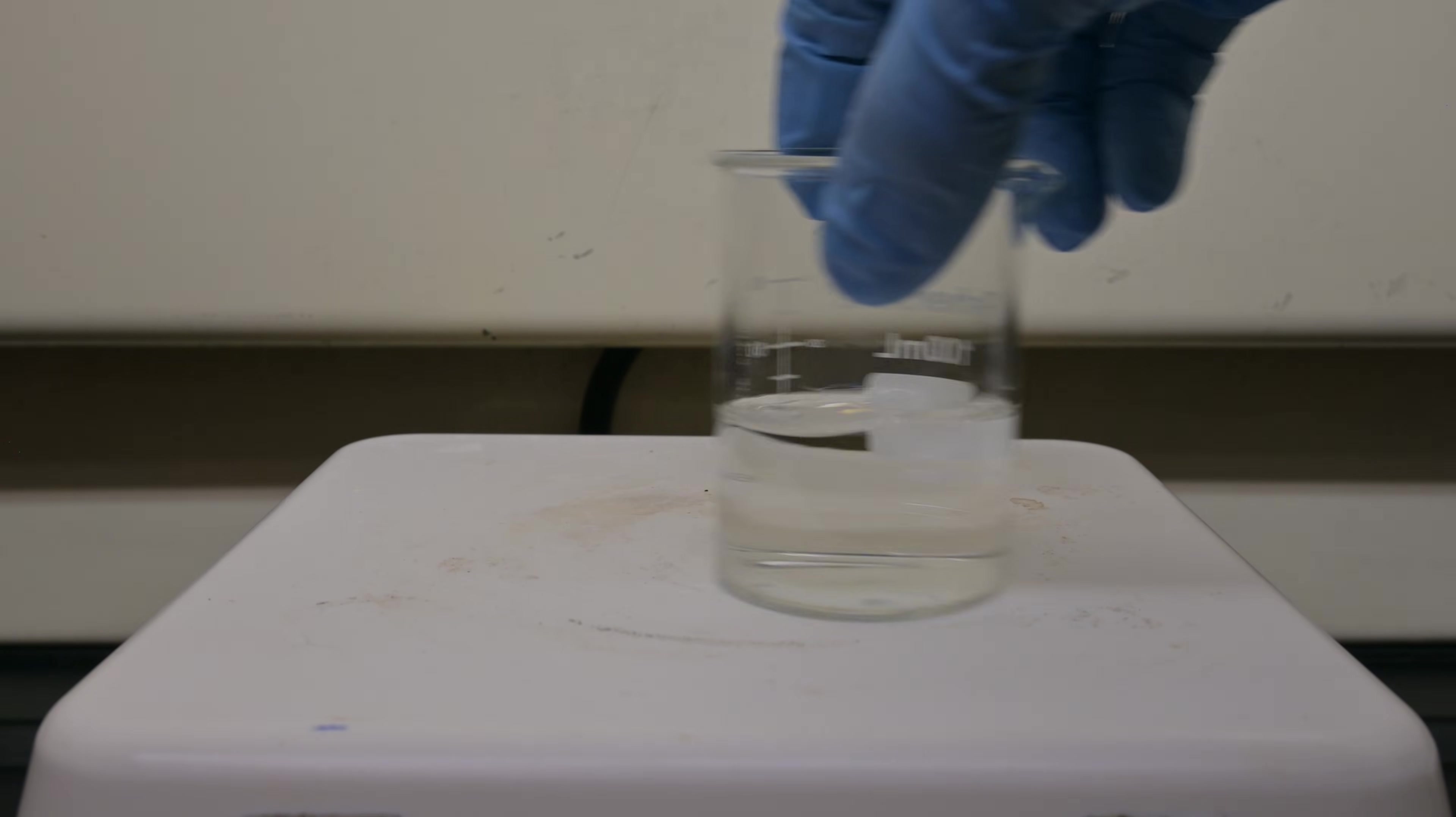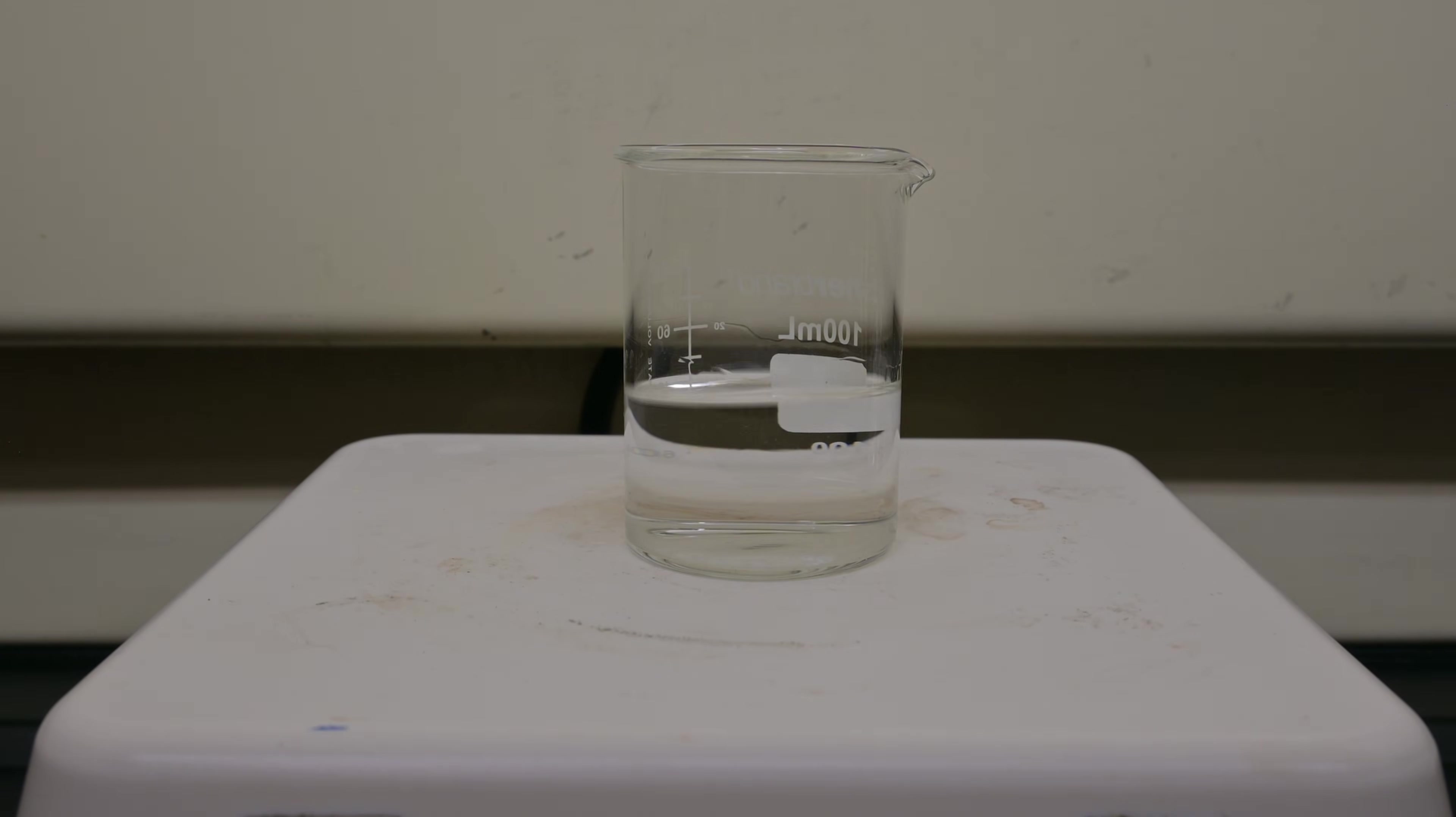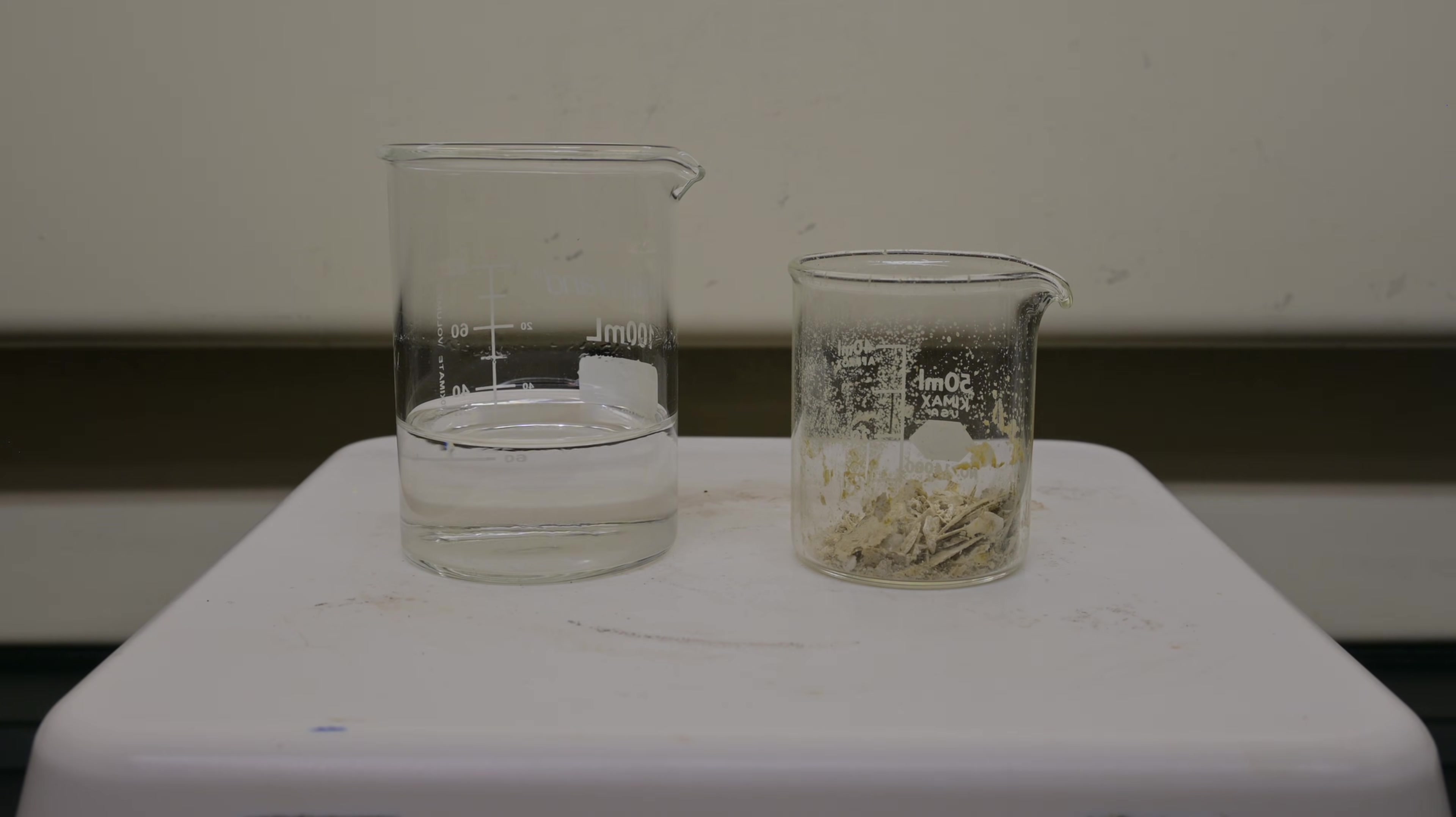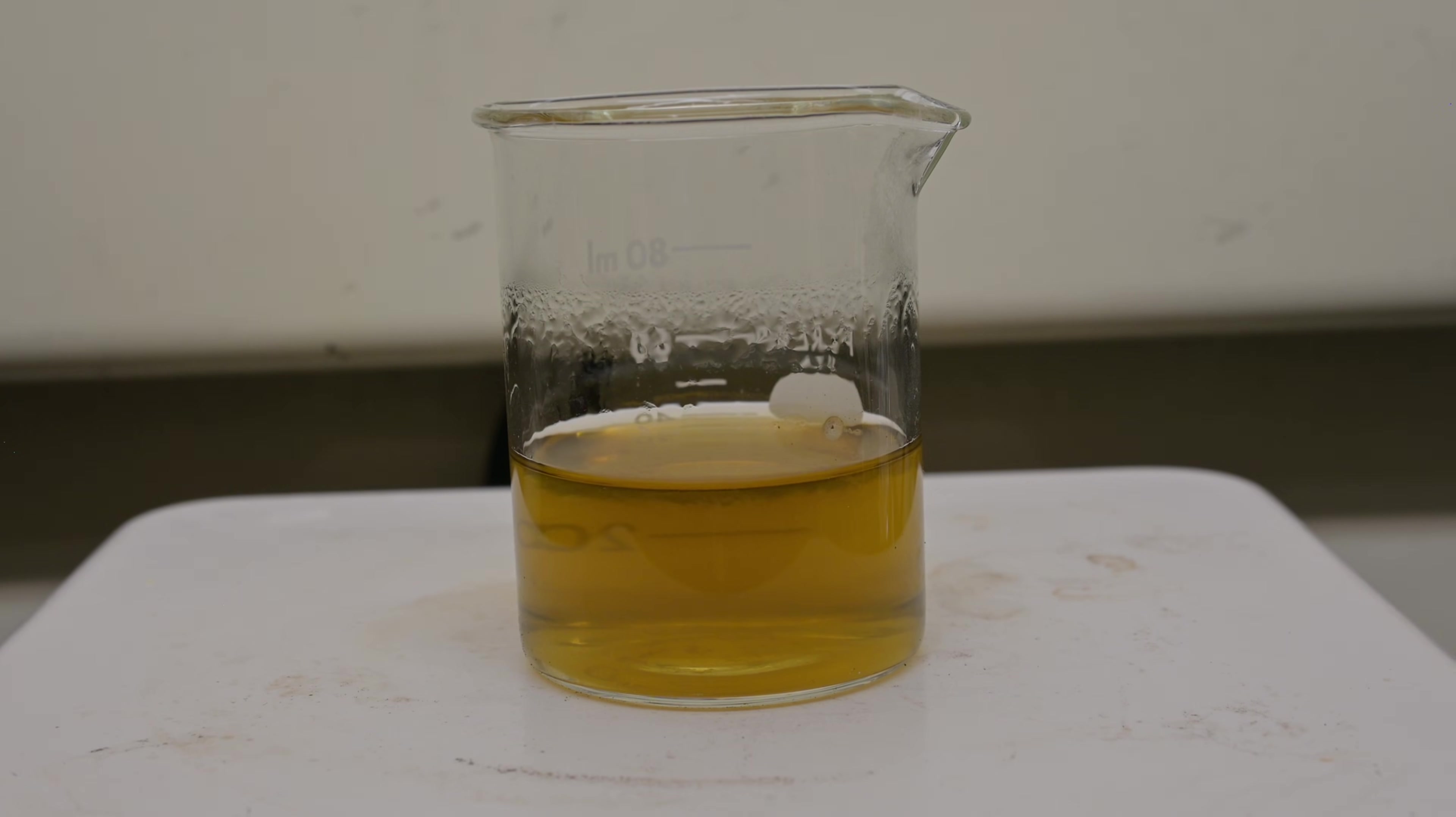The next purification method I'll try is recrystallization. By creating a saturated solution of caffeine in a warm solution, and then decreasing the solubility of the caffeine in that solution, we can cause the caffeine to crystallize out, giving us a pure product. The crystallization of caffeine out of the solution will leave behind any impurities in the solvent we use. I begin by heating some acetone or solvent for recrystallization. Once the acetone starts to boil, I transfer it to another beaker that contains our extraction product.